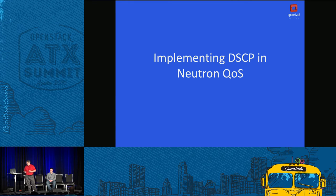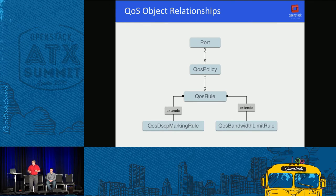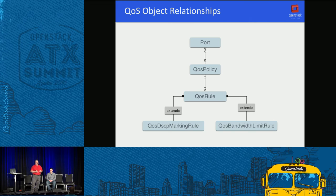Implementing DSCP in QoS: we tried to get this in for Mitaka but didn't quite make it - it is already merged for Newton, so when Newton is delivered this capability will be ready to go. The Liberty release was the first implementation of QoS generally, with bandwidth limiting. The DSCP implementation extends QoS to include DSCP marking as an additional item in your QoS configuration. You can have bandwidth limiting, DSCP, or both - it's not one-or-the-other.